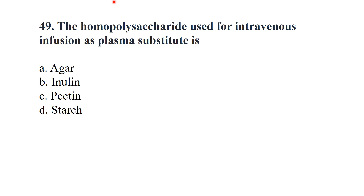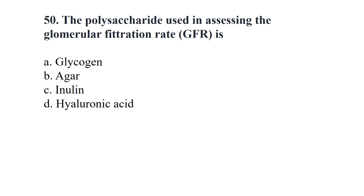The homopolysaccharide used for intravenous infusion as a plasma substitute is dextran. The polysaccharide used in assessing the glomerular filtration rate (GFR) is inulin.